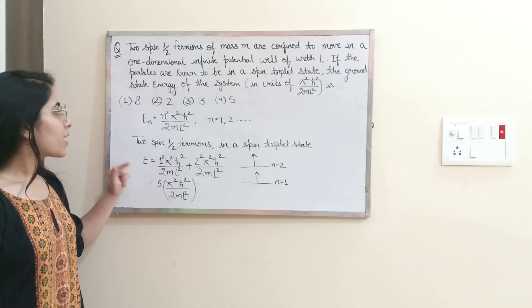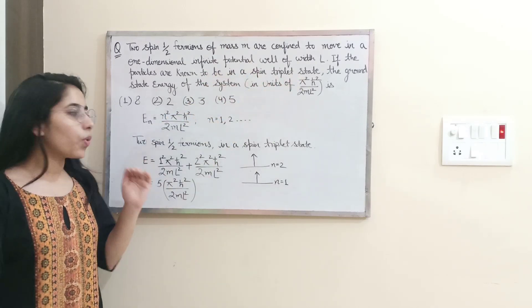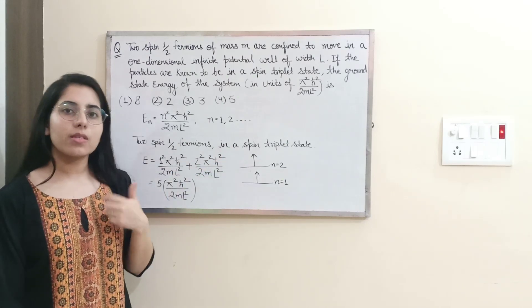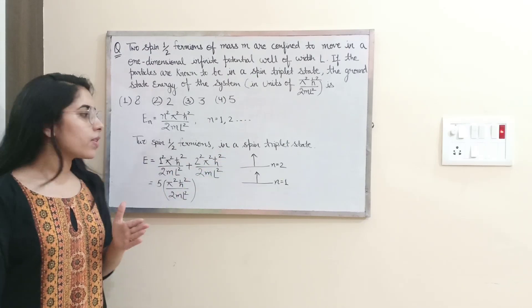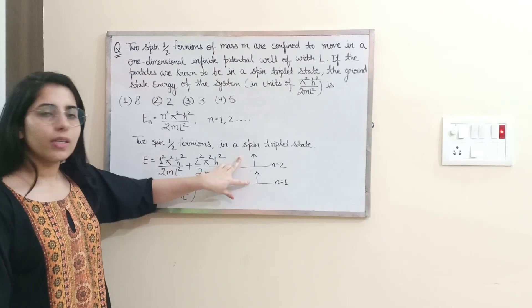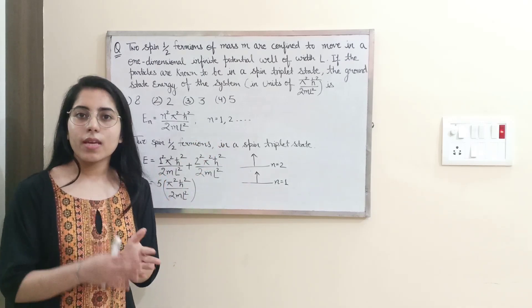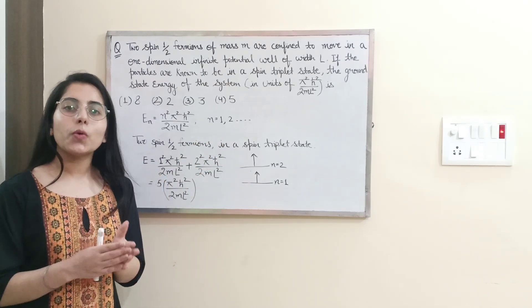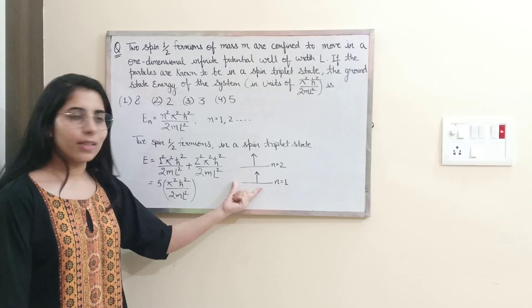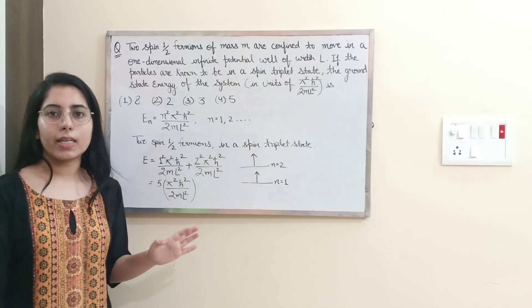Since we are talking about the spin triplet state, two fermions are there and spin of fermions is half. So how can those two fermions be present? They will be in different levels or different states. Why? Because according to Pauli's exclusion principle two particles having the same spin we can't keep them in the same state.